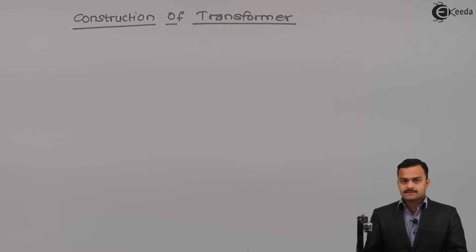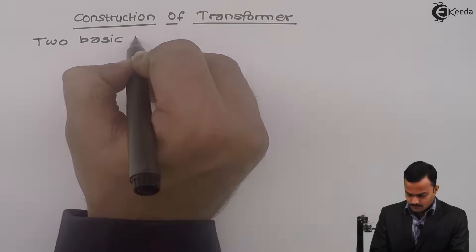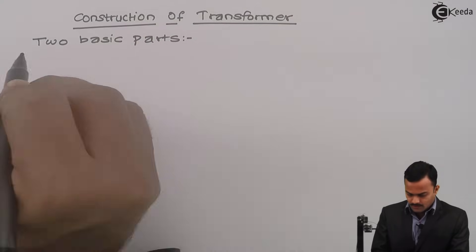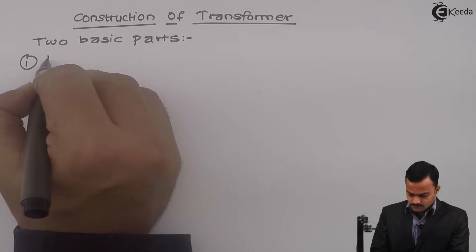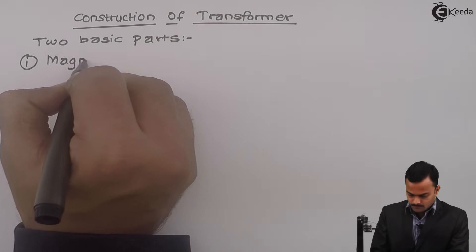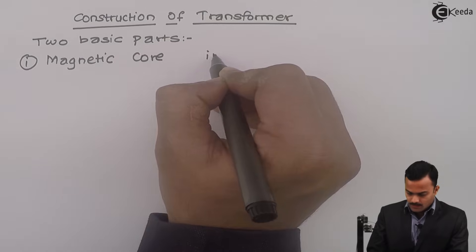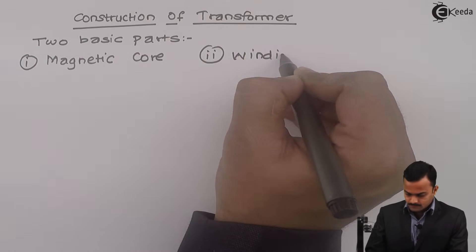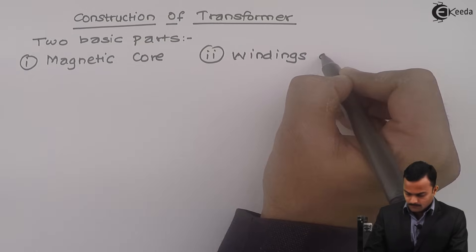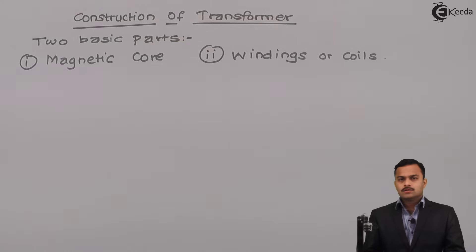There are two basic parts. First is magnetic core and second, windings or coils. So let's discuss magnetic core first.